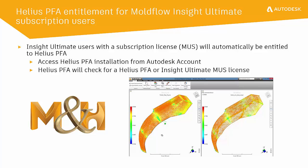We've implemented the entitlement to be user-friendly. The Helios PFA installation file will be available from your Autodesk account. Also, license cascading has been enabled. This means that when a Helios analysis is submitted to the solver, Helios will check for a Helios license first. If one is not found, then it will check for an Insight Ultimate subscription license.